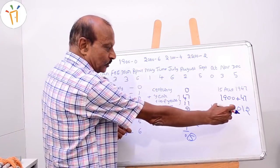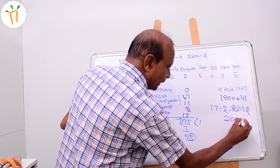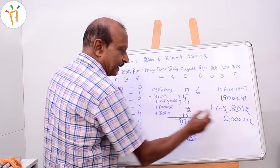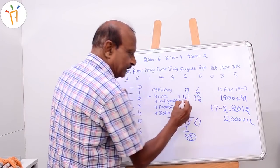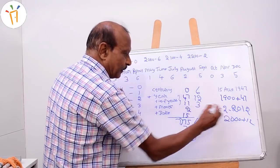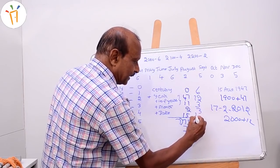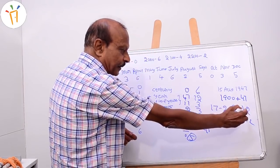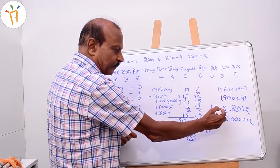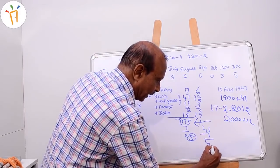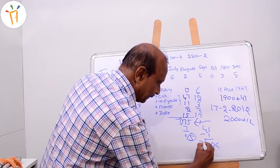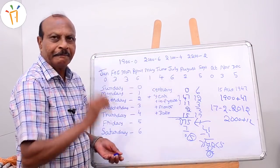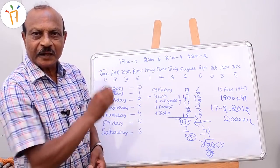Calculate for 17th February 2012, written as 2000 plus 12. Century 2000 code number is 6. Year is 12. Number of leap years: 12 divided by 4 is 3. February code number is 3. Date is 17. Total is 41. Because it is a leap year and we are calculating for February, subtract 1: 40. Divide 40 by 7 — remainder is 5. That is Friday. 17th February 2012 was a Friday.